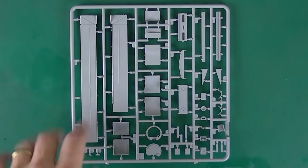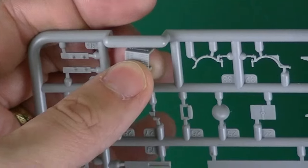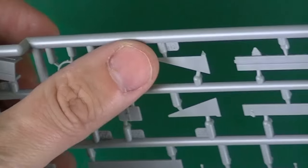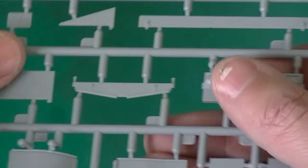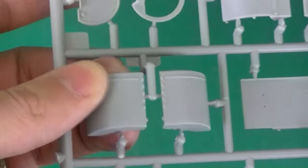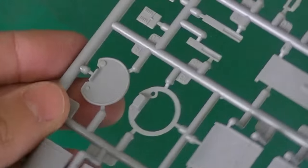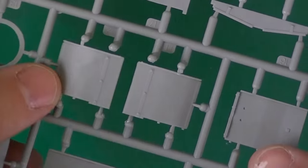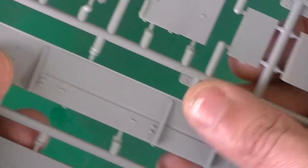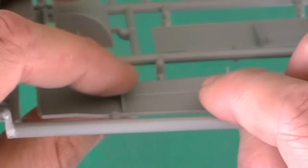Next we have this sprue which looks like fenders and the hatch and a few other things. This looks okay. These fenders look nice. Not quite as thin as I'd expect. Hatch looks pretty good. These fenders have quite a lot of detail on top. These are molded in quite nicely.